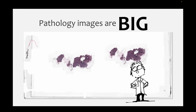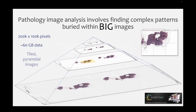What makes things particularly difficult is that pathology images are big. A single image could easily be 60 gigabytes of uncompressed data. These images are pyramidal images, which essentially means that you have the image data stored at multiple resolutions - like multiple magnifications. You could have the full-resolution image, and then a zoomed out version, and another zoomed out version, and all of these are broken into little square tiles. QPath needed to be written to be able to work with this data, because you can't read the entire 60 gigabyte image in one go.